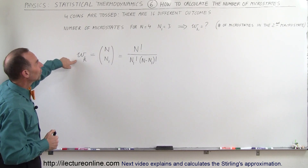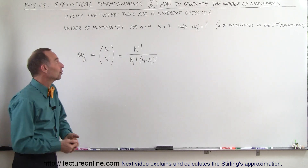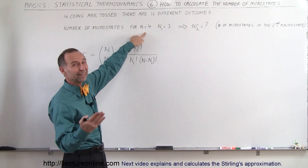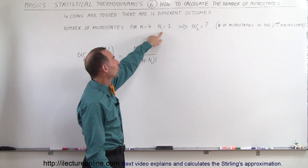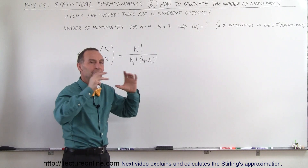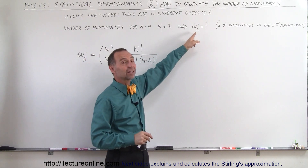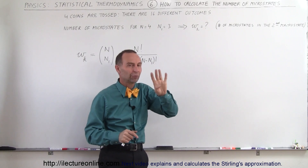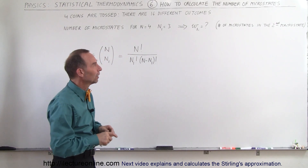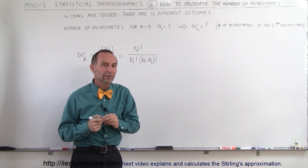We're going to find the number of microstates in the second microstate. We have n equal to four — four entities, four coins. N sub 1 equals 3, meaning the number of heads in a particular microstate is equal to 3, which means we're talking about the second microstate. Remember, the first one had four heads, the second one had three heads, the third one had two heads, and so forth.